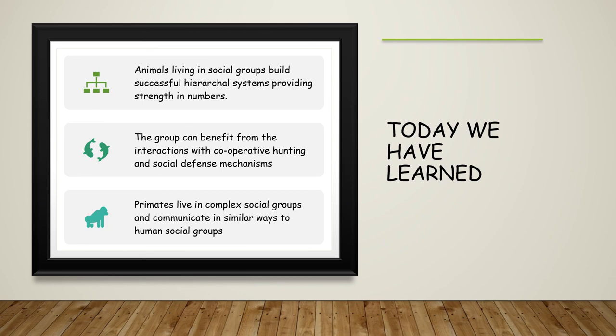To close today's lesson, we'll summarise what we've learned. Animals living in social groups build successful hierarchical systems providing strength in numbers. The group can benefit from interactions such as cooperative hunting and social defence mechanisms. Our primate cousins live in complex social groups and communicate in similar ways to human social groups. There's plenty more to learn and review, but hopefully you found that engaging and interesting. If you have any problems, questions, or queries, get in touch — speak to you again soon.